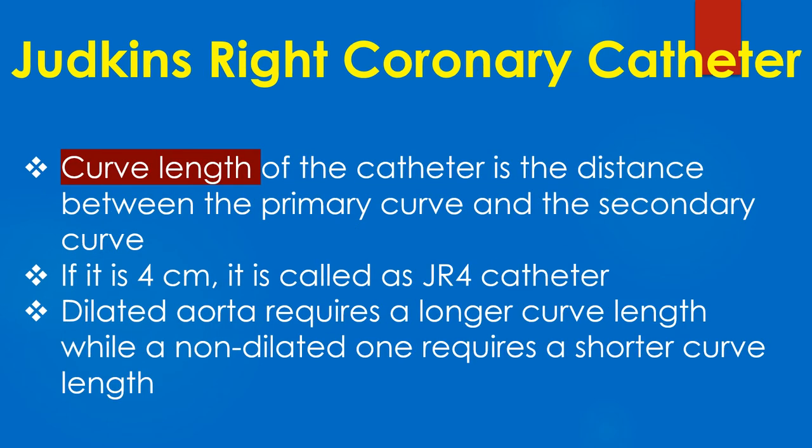The curve length of the catheter is the distance between the primary curve and the secondary curve. If it is 4 cm, it is called a JR4 catheter. A dilated aorta requires a longer curve length while a non-dilated one requires a shorter curve length.